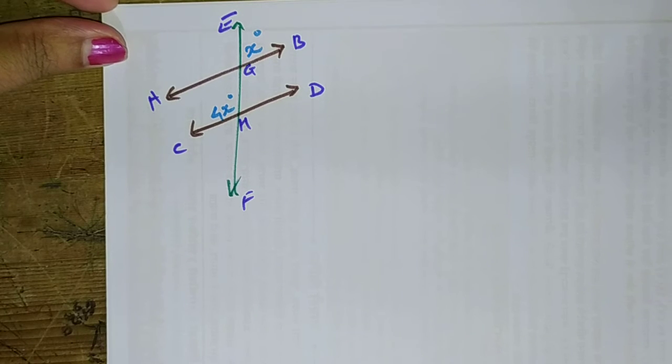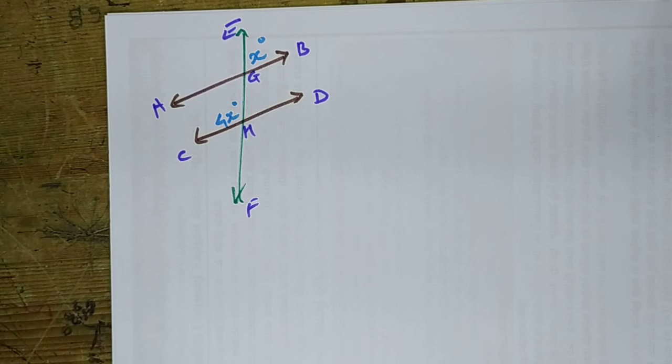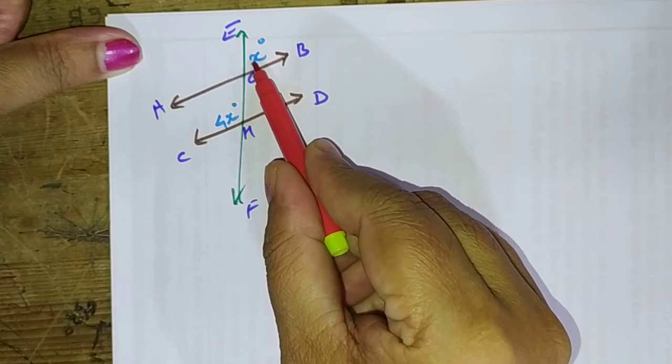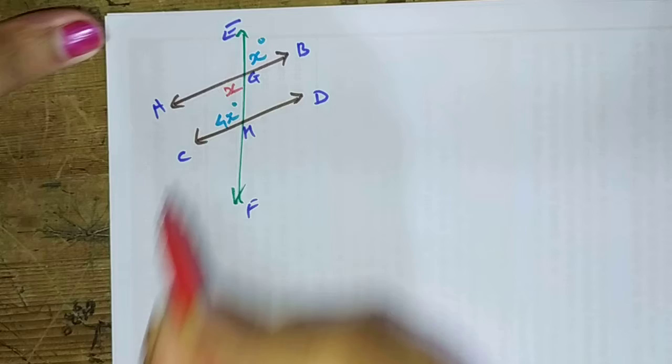Now first of all let us follow the rule of alternate angles. And by the alternate angles we get that if this angle is X, this angle that is AGH also should be X.